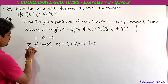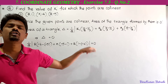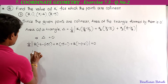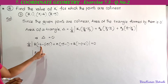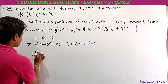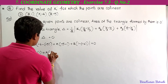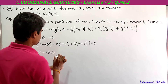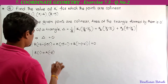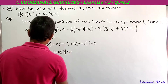Now simplify. Taking 2 to the right side gives 0. So: 8 into (-4 + 5) = 8 into 1 = 8. k into (-5 - 1) = k into -6 = -6k. 2 into (1 + 4) = 2 into 5 = 10. So: 8 - 6k + 10 = 0.